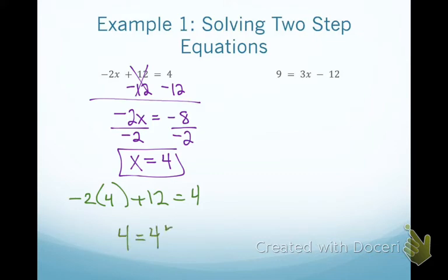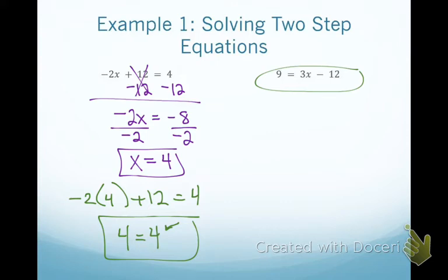The great thing about these concepts is you can be sure your answer is correct because you have the option to check. Now looking at the second equation — you should notice it's written kind of backwards. The variable is on the right side. That's okay; you don't necessarily have to rewrite it. You always need to focus on the side with the variable, because getting the variable by itself is your main goal.